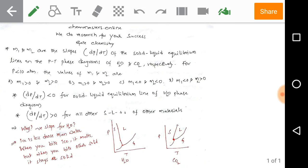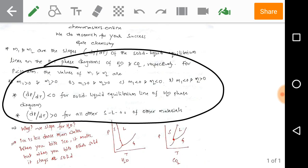Right, first just remember this point - important conclusions. I'm directly giving the answer for it. If we take dp by dt, it is always less than 0 or negative for solid-liquid equilibrium lines of water phase diagram.